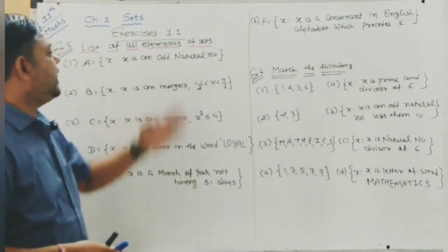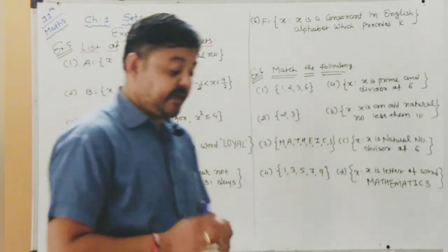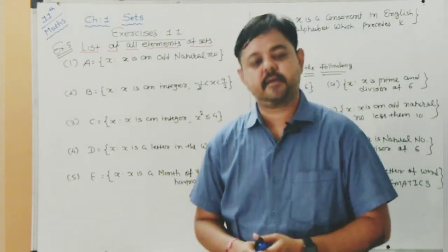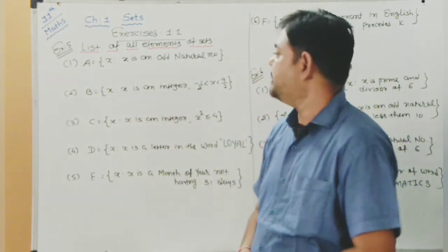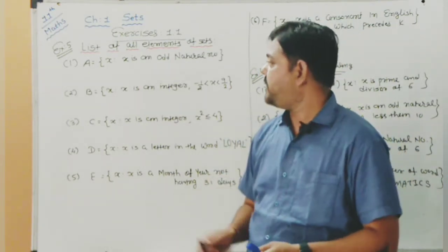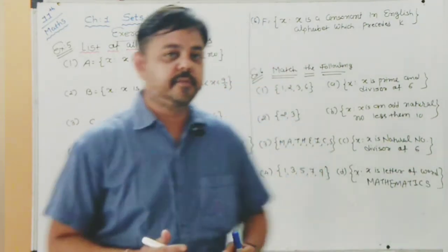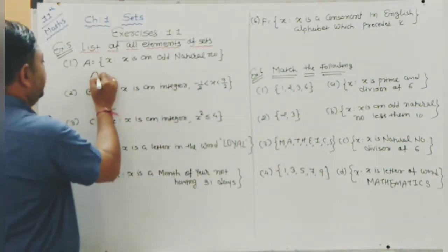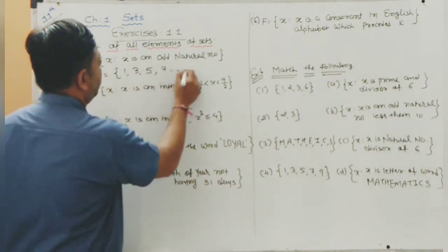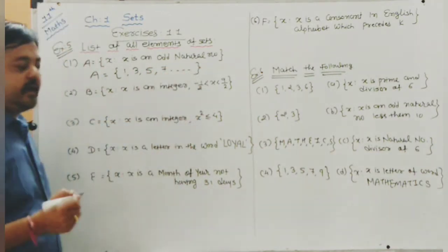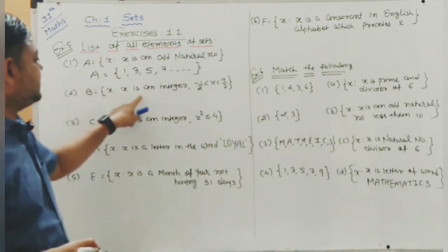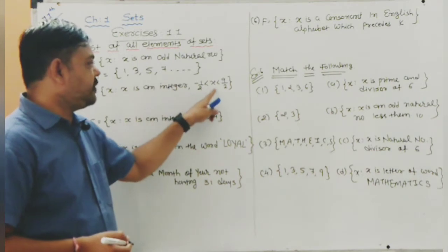Example number 5: list all elements of the given sets. First question, Set A = {x : x is an odd natural number}. The elements are: 1, 3, 5, 7, ... and so on.